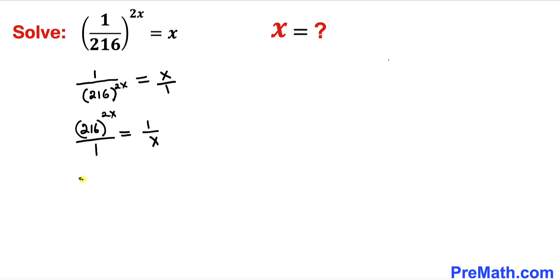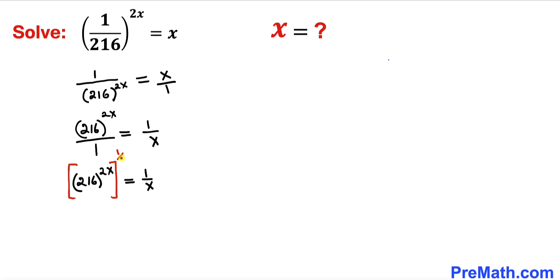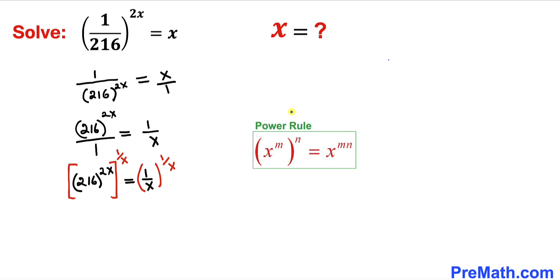The left-hand side is 216^(2x) = 1/(1/x). Now let me take a power of 1/x on both sides. Recalling the power rule of exponents, I can multiply out these two nested exponents on the left-hand side.